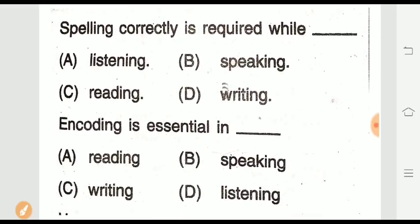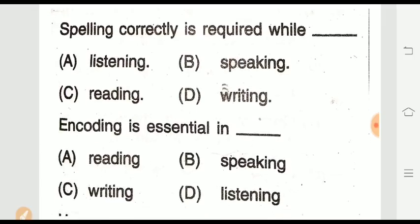Question twelve: Spelling correctly is required while doing which skill? Options are: listening, reading, speaking, or writing. The right answer is writing — spelling correctly is required while writing.